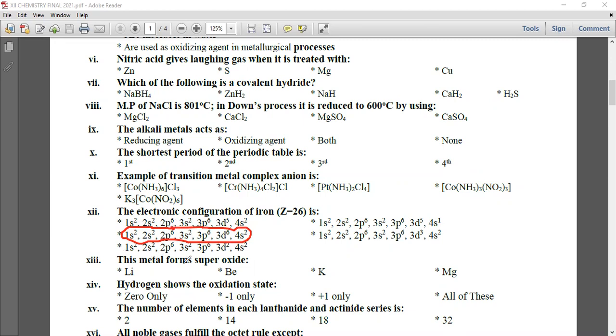This metal forms superoxide: Potassium. Three elements form superoxides - potassium, rubidium, and cesium. Hydrogen shows oxidation states of all of these: plus one with non-metals, minus one with metals, and zero in molecular form. The number of elements in each lanthanide and actinide series is 14. Both lanthanide and actinide series contain 14 elements.